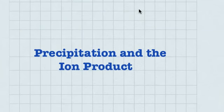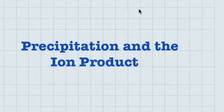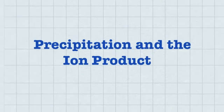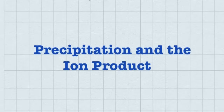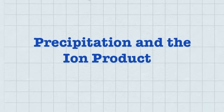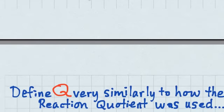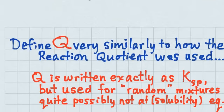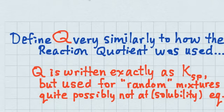Welcome back. Thanks for coming back to enjoy, learn, think, and work on a good grade. So precipitation and the KSP — we alluded to this already, saying that the formation constant is the reverse of the KSP constant. Let's look at it again in a different way. What we want to do is come up with this thing called Q again.